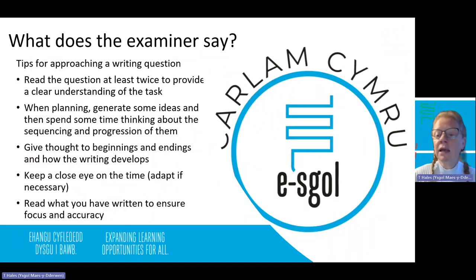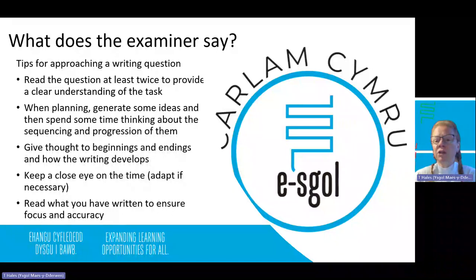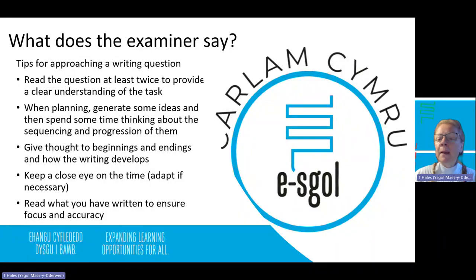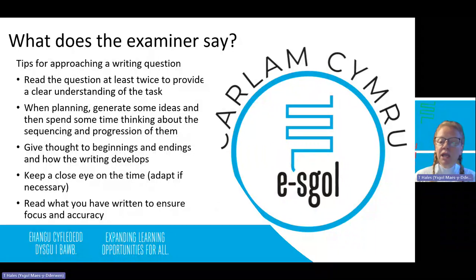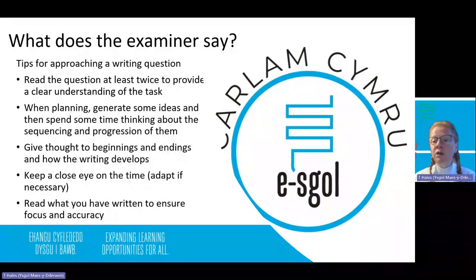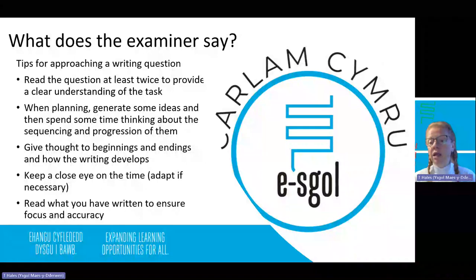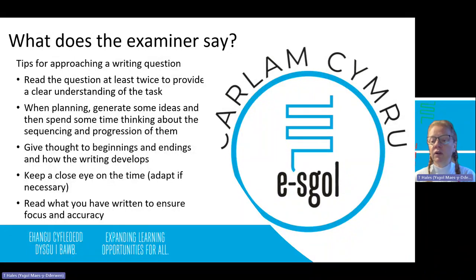The examiners say that when approaching a writing question, always read the question at least twice. Make sure you're planning and generating ideas — not just writing down your structure, but actually thinking about what you'll include in each paragraph and how you'll link ideas together. Think about beginnings and endings. Keep a close eye on time — if you're running out, leave out one idea and go straight to your conclusion so you have a finished piece. Then read over what you've written and check basics like full stops, capital letters, and paragraphing.